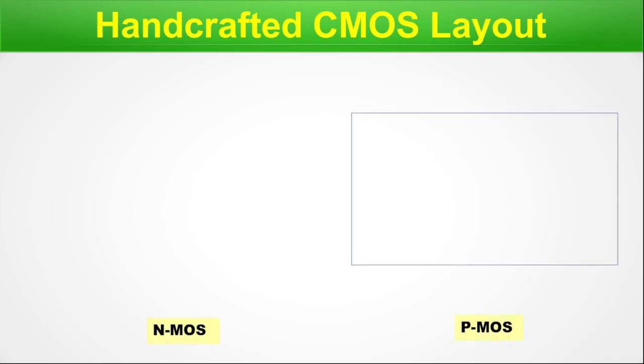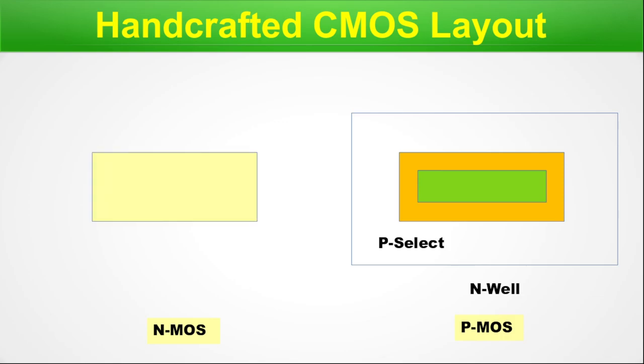Handcrafted CMOS layout. I will show one particular layout of a simple CMOS inverter, because in a similar way the layout is done for each individual standard cell — to give an idea of how standard cell layouts are handcrafted. A CMOS will have an NMOS and PMOS. Here is the N-well in which the PMOS will be created, and inside that we have a P-select layer. Next we have the diffusion layer marked in green, and we move on to the NMOS side.